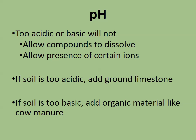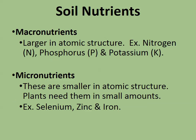If soil is too acidic, you can add some limestone into it. If soil is too basic, you can add organic material like cow manure. When you're thinking about acidic soil, think of your acid mine drainage — you add lye or limestone to increase the pH of it.